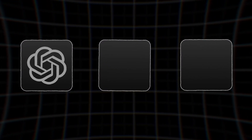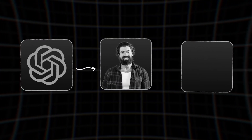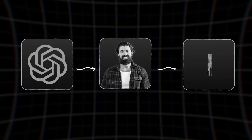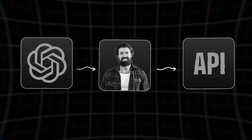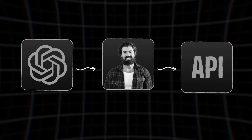Straight off the bat, I knew I needed three things. First and foremost, the actual chatbot build. Second, a database with all of Alex's information. And third, an API I could plug it into — meaning a platform like WhatsApp or Telegram.